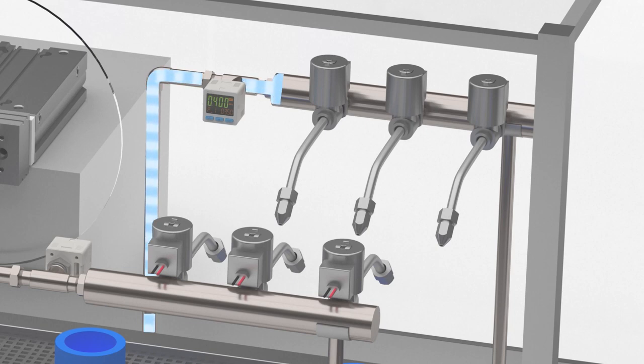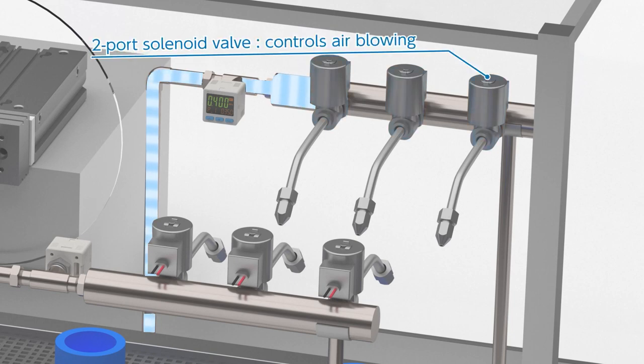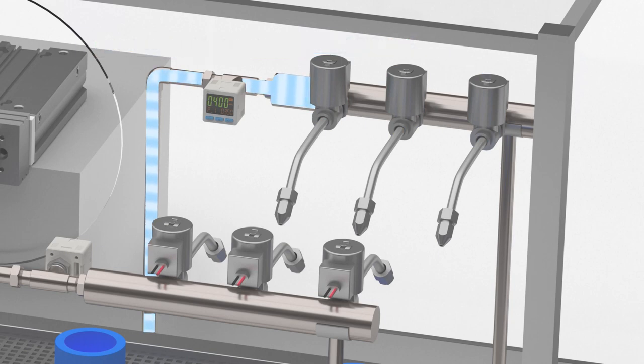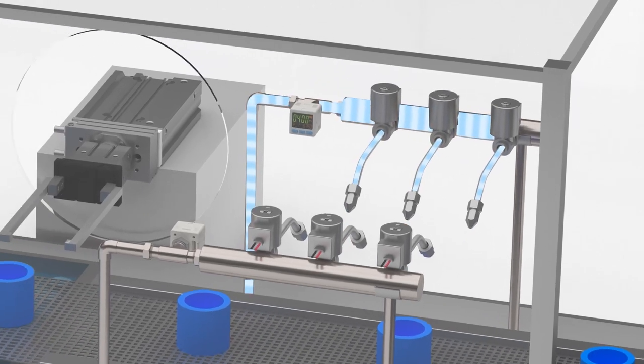The workpieces are now blow-dried. To do this, two port solenoid valves switch on and off the air flow. And a digital flow sensor monitors the flow rate. Energy-saving blow nozzles direct the flow for best cleaning efficiency.